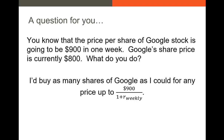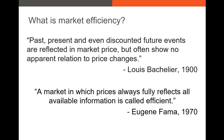So I might borrow a bunch of cash from my broker, bank, or a friend and use that to buy up shares of Google until the share price is just shy of $900. Why do we care about this theoretical exercise? Well there are several definitions of market efficiency. One of the oldest definitions would be attributed to Louis Bachelier, who said that past, present, and even discounted future events are reflected in market price but often show no apparent relation to price changes.